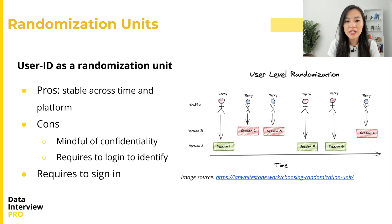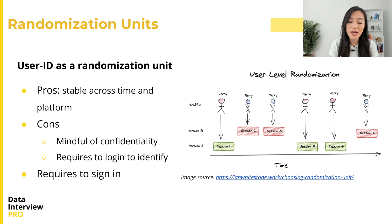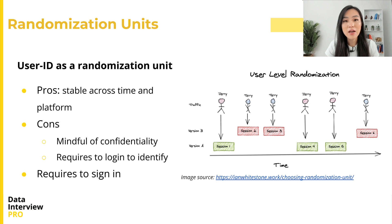User IDs are stable across time and platforms. Once a person registers on a website, a unique user ID is attached to their account — that's a huge pro. However, a user ID can be used to reveal a person's identity, so we need to be mindful of confidentiality and security issues when using user ID for identification purposes.